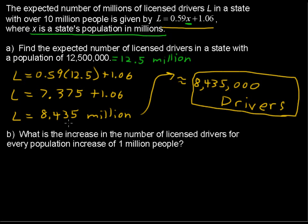The next one: what is the increase in the number of licensed drivers for every population increase of 1 million people? Again, X is the state's population in millions. So if you increase the population by 1 million people, it's just like increasing X by 1.